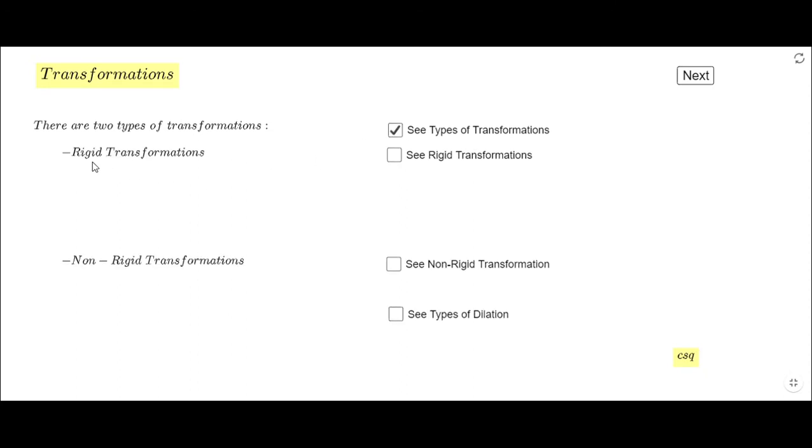There are rigid transformation and non-rigid transformation. If I click here I'm going to see what we call rigid transformation. There are three of them: translation, reflection, and rotation. Non-rigid transformation is only one, dilation, but there are two types which we're going to see a little bit later, enlargement and rotation.